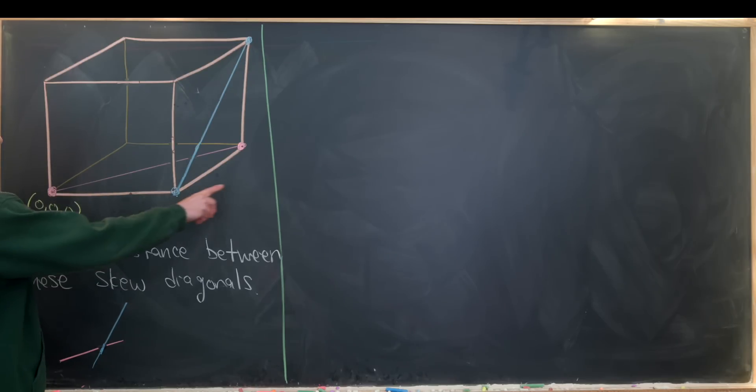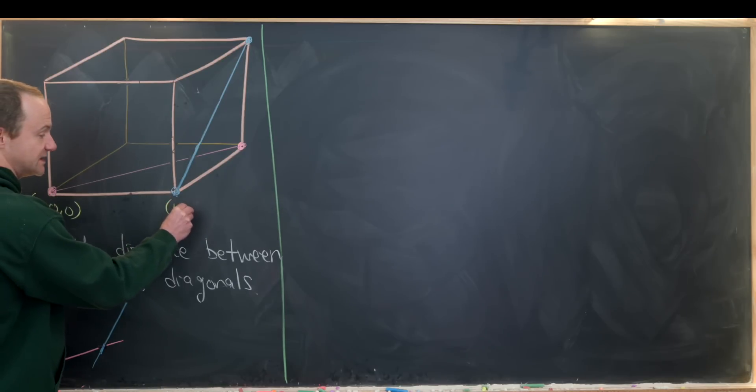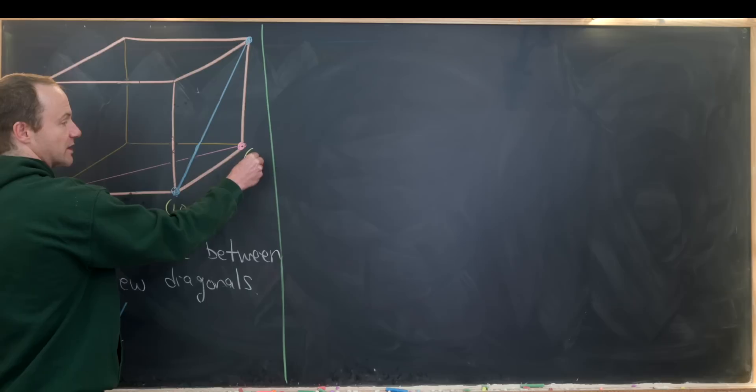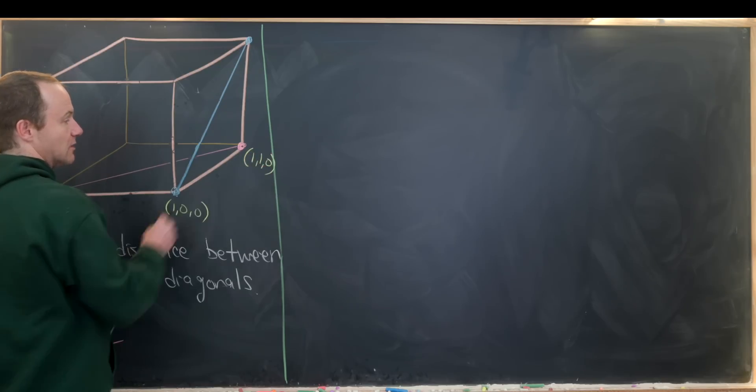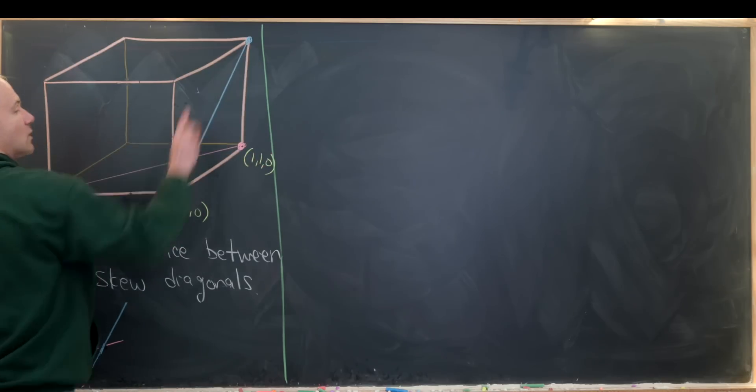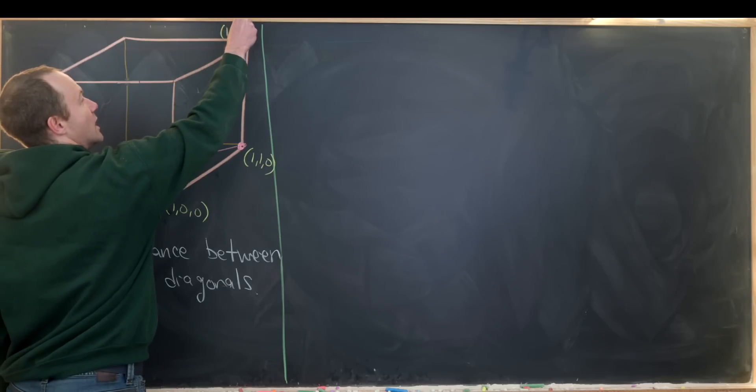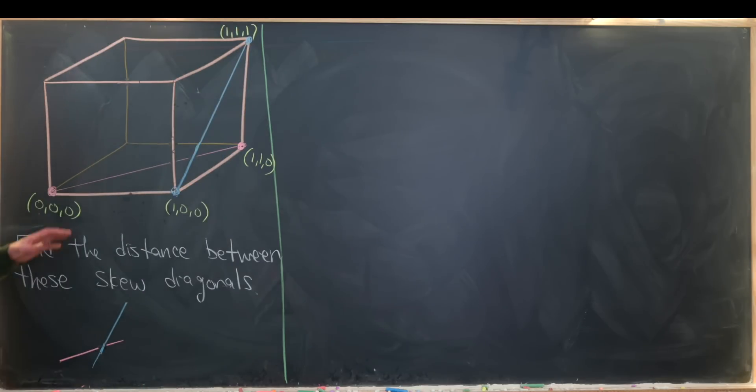And then this will be the x-axis going along this direction, so this will be the coordinate 1, 0, 0. Then the y-coordinate goes back here, so this will be the coordinate 1, 1, 0. And then finally the z-coordinate goes up in this direction, so this is the coordinate 1, 1, 1. So now those are all the points that we really need, although you could figure out what these remaining vertices are in terms of our coordinates, but that's not super necessary here.